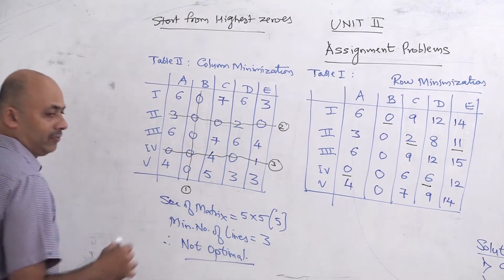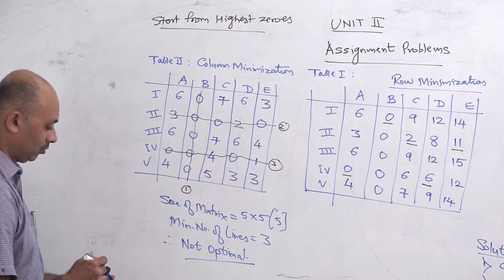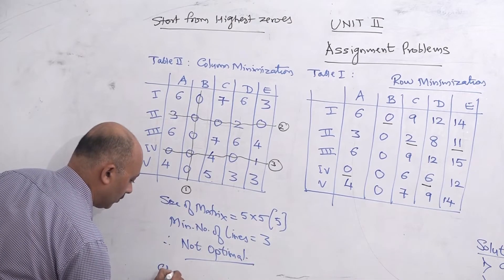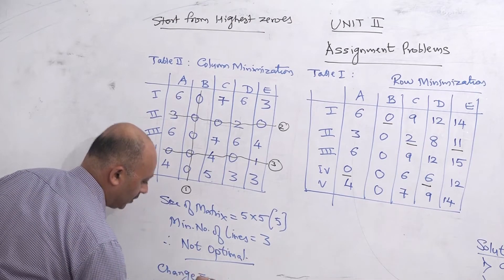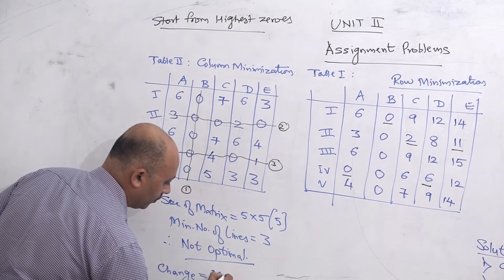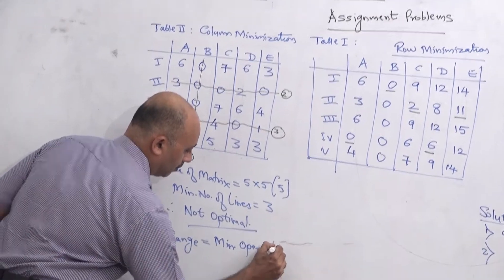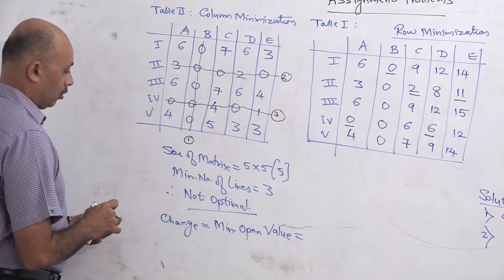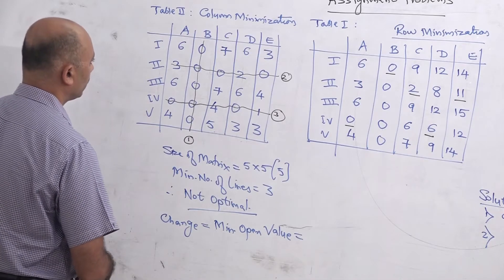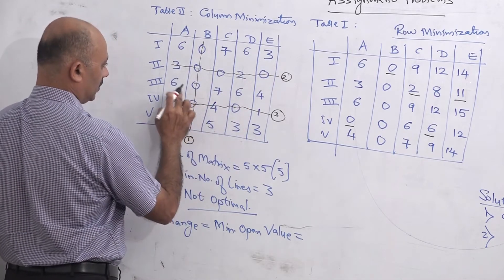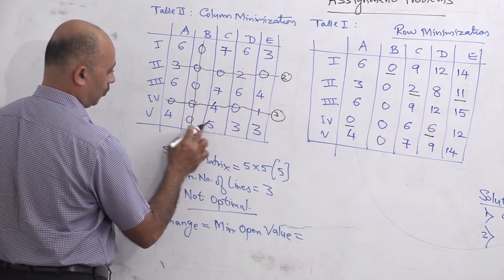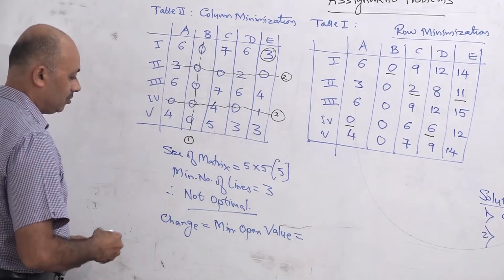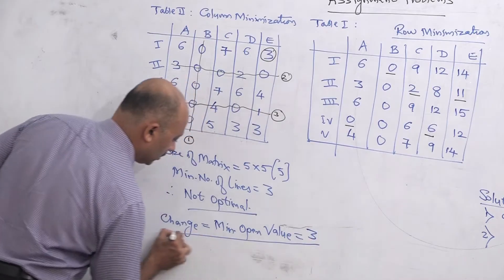Since the solution is not optimal, we have to change it. The change value is equal to the minimum open value — the minimum value among cells not covered by any line. Looking at the open values: 6, 7, 6, 3, 6, 7, 6, 4, 4, 5, 3, 3 — the minimum open value is 3. So the change equals the minimum open value, which is 3.